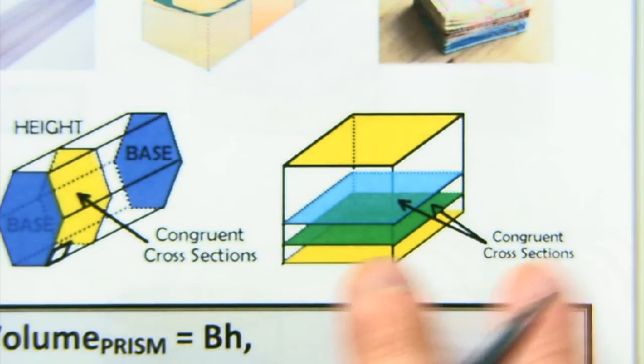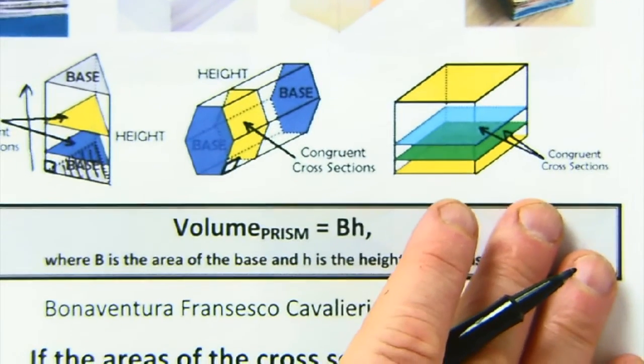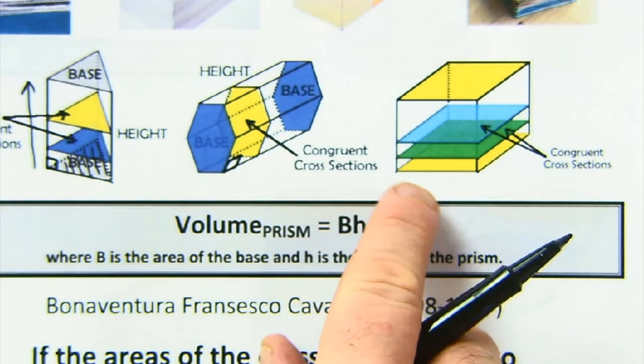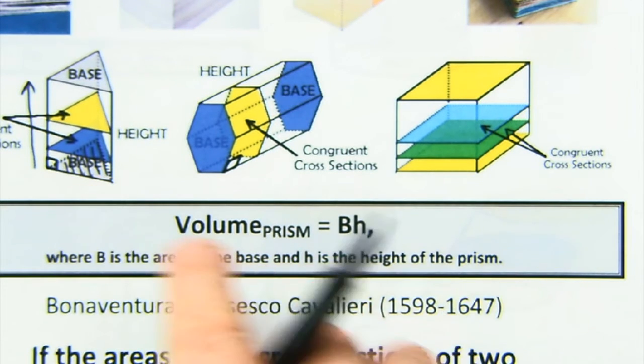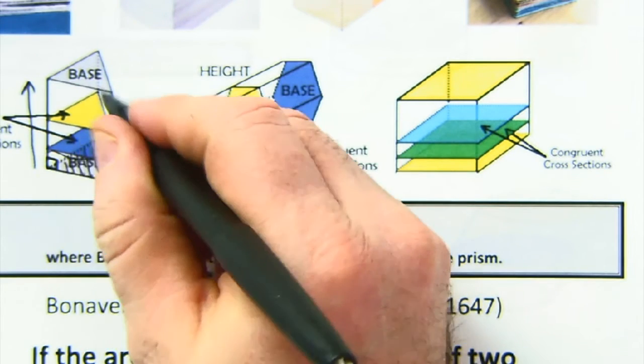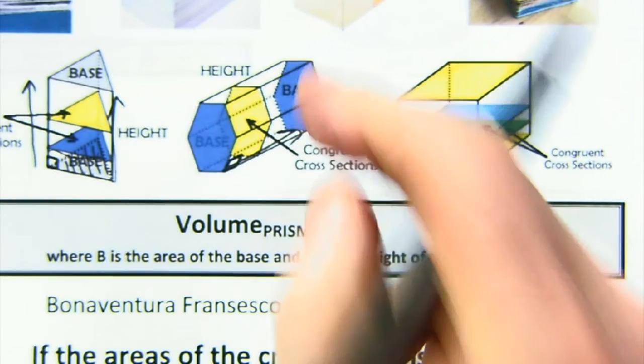Same thing here. Actually, volume is a very easy formula in this world. It's basically one base, one hex, one square, one triangle, and then times the height. In other words, just keep stacking it and stacking it all the way for that entire height to fill in the shape.